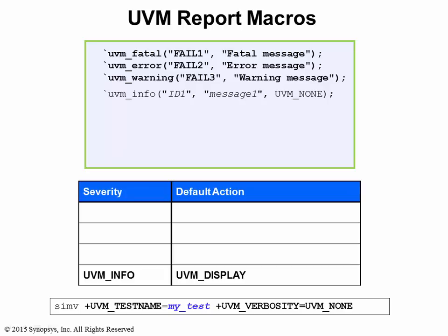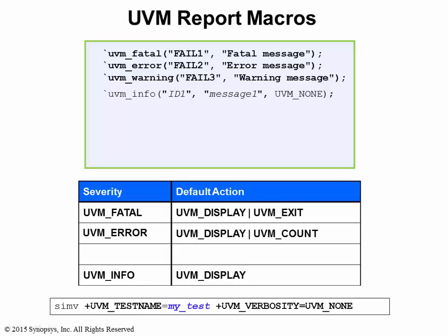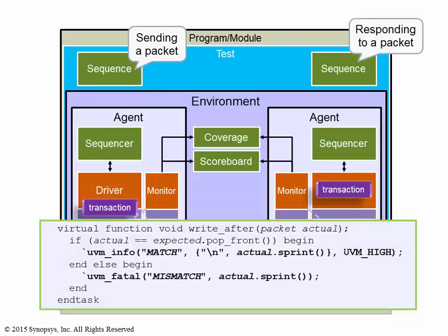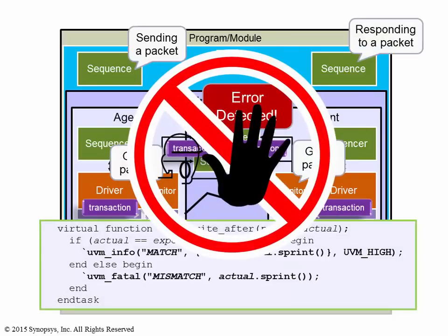These failure severities also have simulation actions associated with them. For the fatal severity, the associated action is termination of simulation immediately after the message is displayed. For the error severity, the associated action is the increment of an error count — users can then specify the count at which to terminate simulation. The warning severity has the same default action as the info severity. Instead of calling SystemVerilog's $fatal or $finish, let's make use of the `uvm_fatal macro. The difference is you can now manage the report messages externally without modifying the existing code.